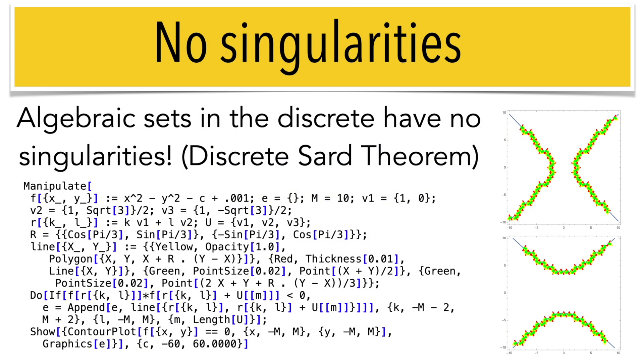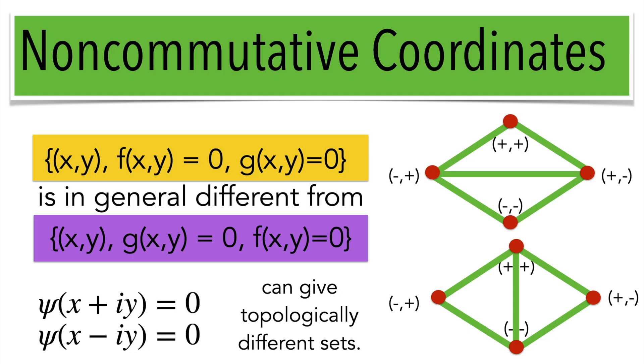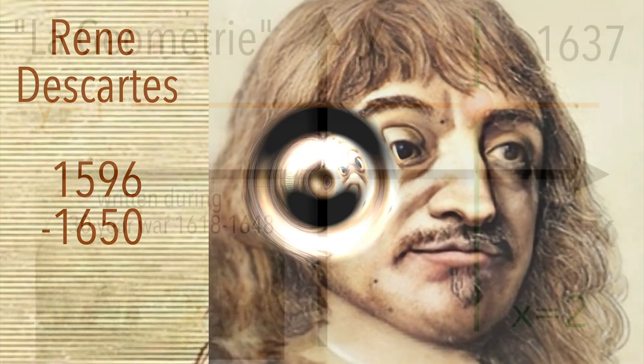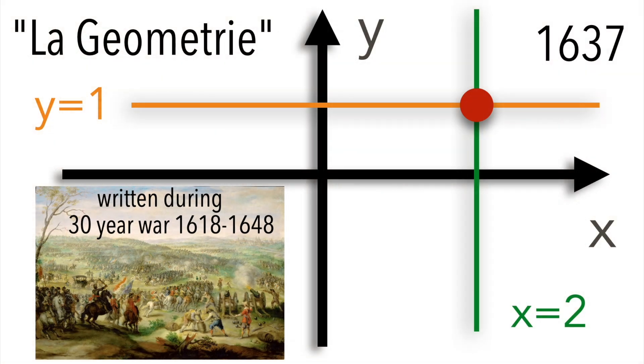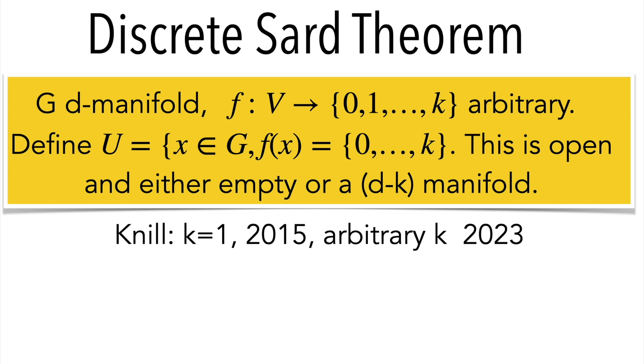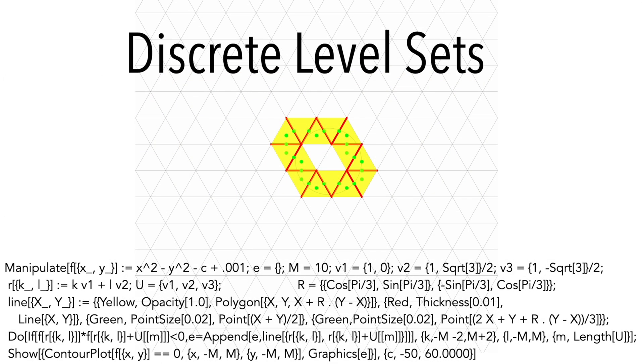A third interesting feature in the discrete is that level sets never have singularities. Non-commutative coordinates have been defined by Descartes in 1637 in La Géométrie related to the problem to define a Cartesian product. And that's in the discrete a little bit tricky because the Cartesian product of simplicial complexes is not a simplicial complex. We use the discrete Saar theorem. A general function from the vertex set to a finite set defines then manifolds of lower dimensions.